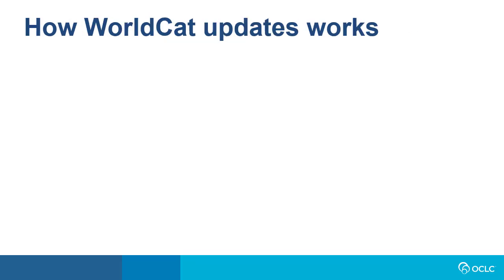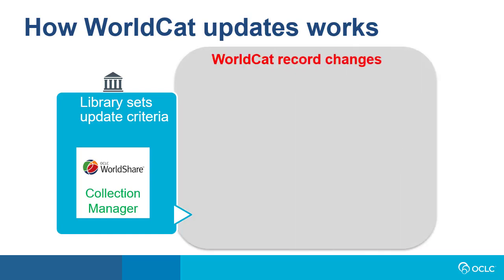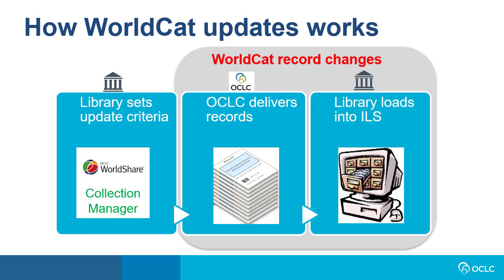How WorldCat updates works: You begin by setting your library's WorldCat updates criteria in Collection Manager — for instance, whether you want to get updated records or not, as well as based on what types of changes. As changes to the WorldCat records meet your library's criteria, Collection Manager delivers updated records and applies your record customizations to these records. You then download the files of records and load these records into your library's local catalog.